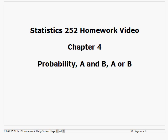This is a second homework help video for Chapter 4 for statistics. In this video, I will cover the probability of two events, A and B occurring, or the probability of A or B occurring.